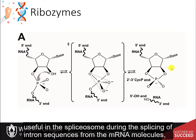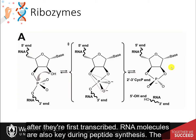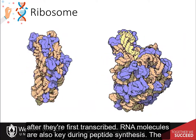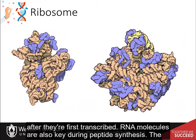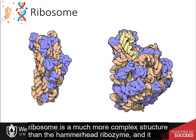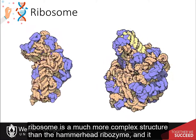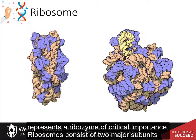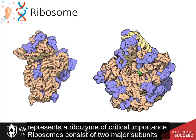Small RNA molecules are also really useful in the spliceosome during the splicing of intron sequences from messenger RNA molecules after they're first transcribed. RNA molecules are also key during peptide synthesis. The ribosome is a much more complex structure than the hammerhead ribozyme, and it represents a ribozyme of critical importance.